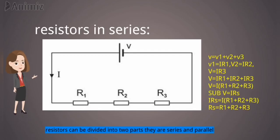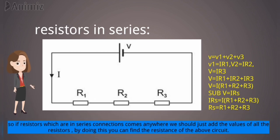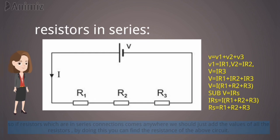Resistors can be divided into two parts, they are series and parallel. Now let us see about resistors in series. When resistors are connected in series, the amount of charge Q passing through each resistor is the same. Due to this reason, the current I passing through all three resistors is the same. So if resistors are in series connections, we should just add the values of all the resistance. By doing this, you can find the resistance of the above circuit.